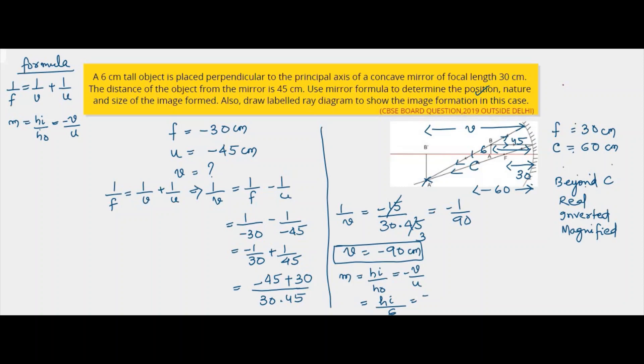V is minus 90 by minus 45. So minus minus gets cancelled, so here height of the image by 6 is minus 2, which implies height of the image is minus 12 centimeter.